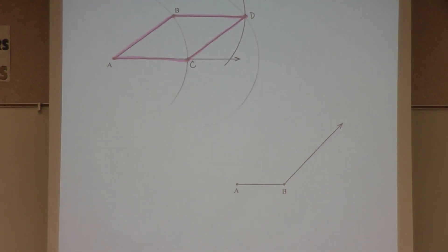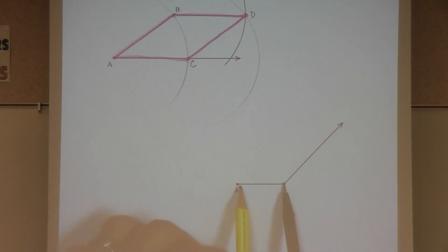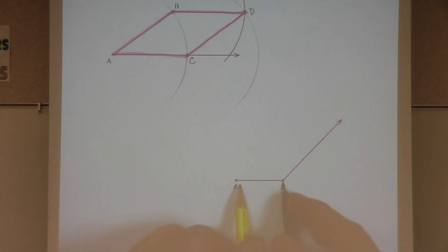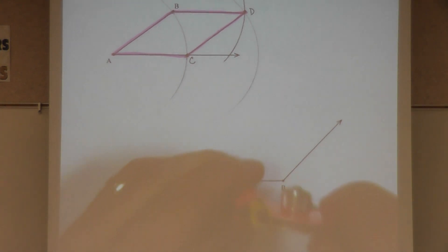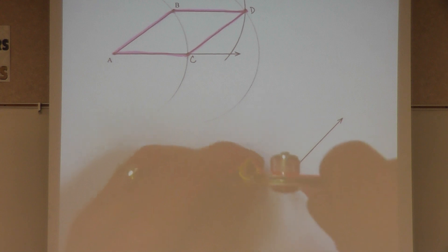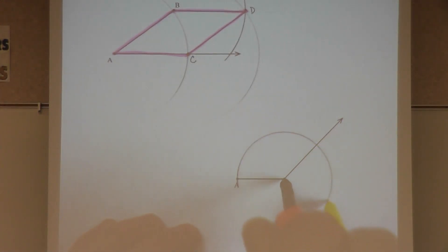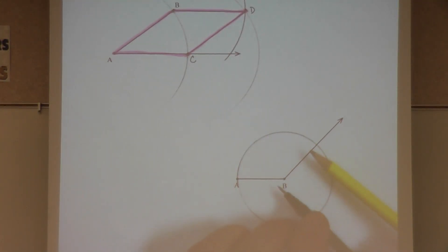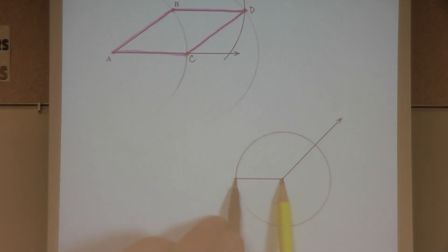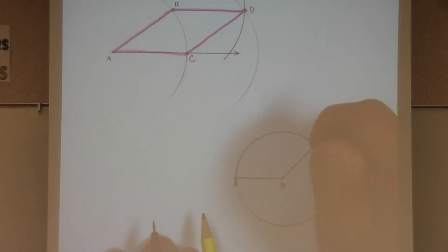Hopefully you've had time to work this out on your own. Again, I'm going to start by setting the compass to length AB. I'll put the point on B, pencil to A, and move this measurement over until it touches the ray. So this length over here, which I'm going to call BC, has the same length as AB. The rhombus has all sides equal — I now have two of the four sides.